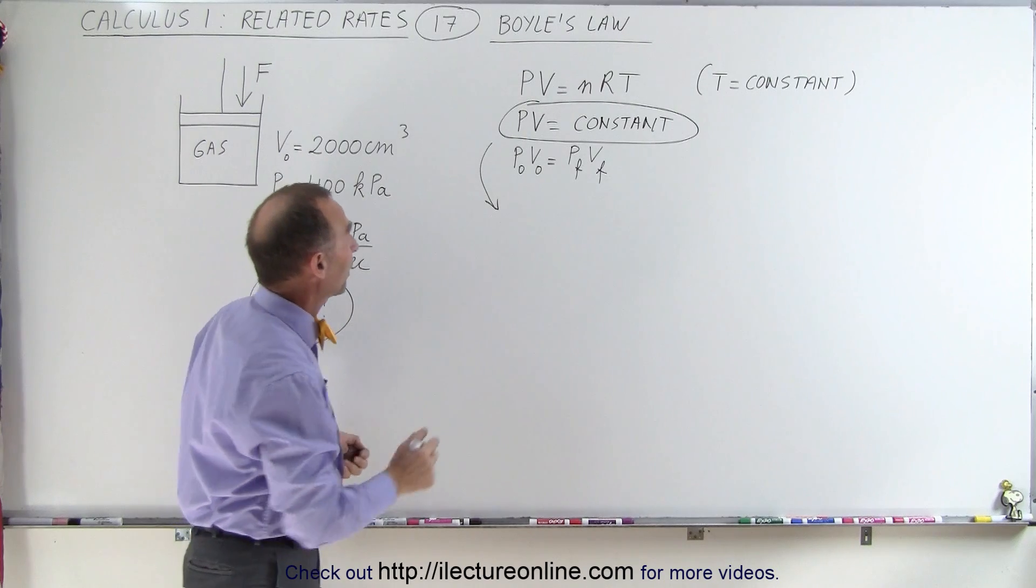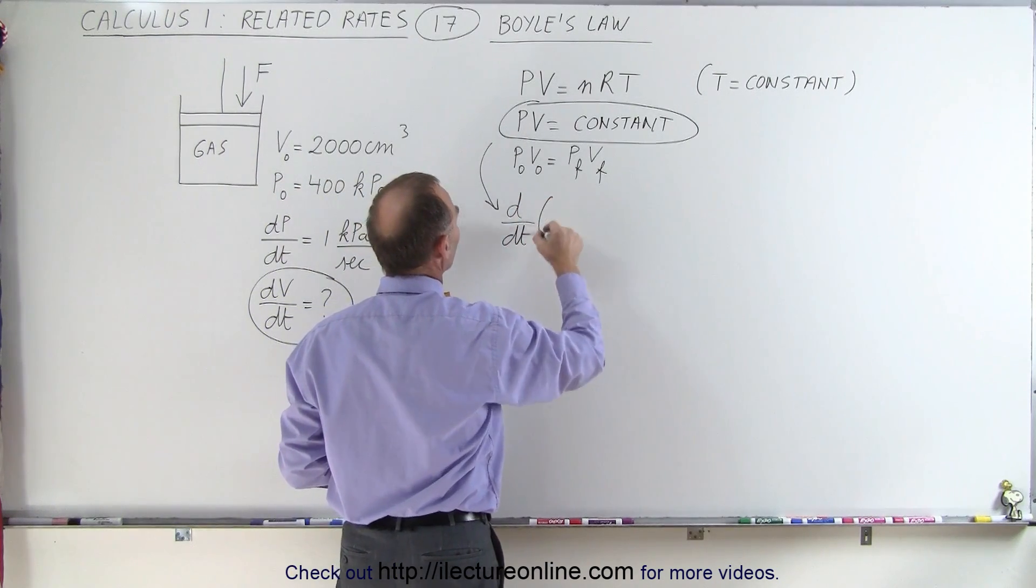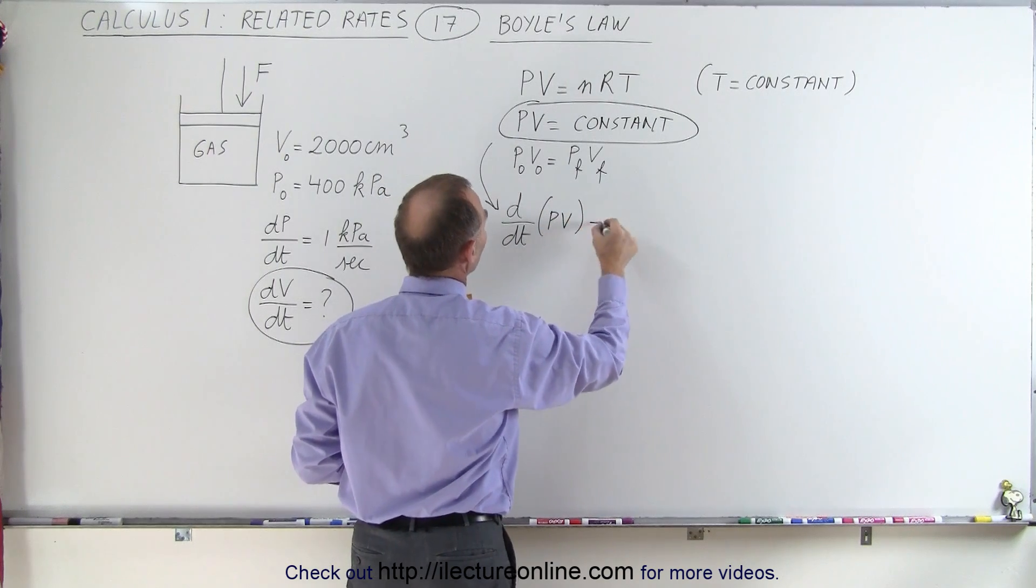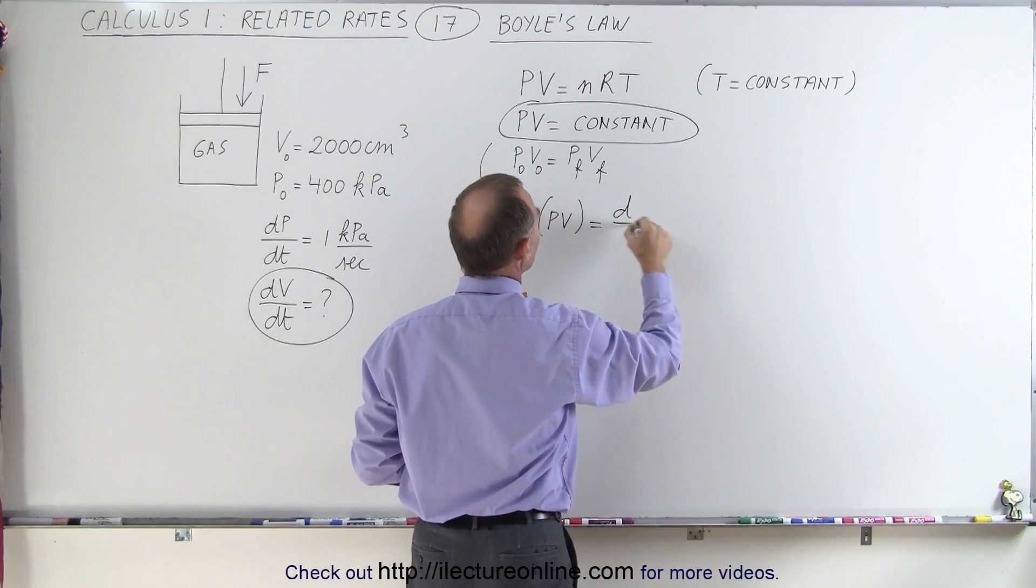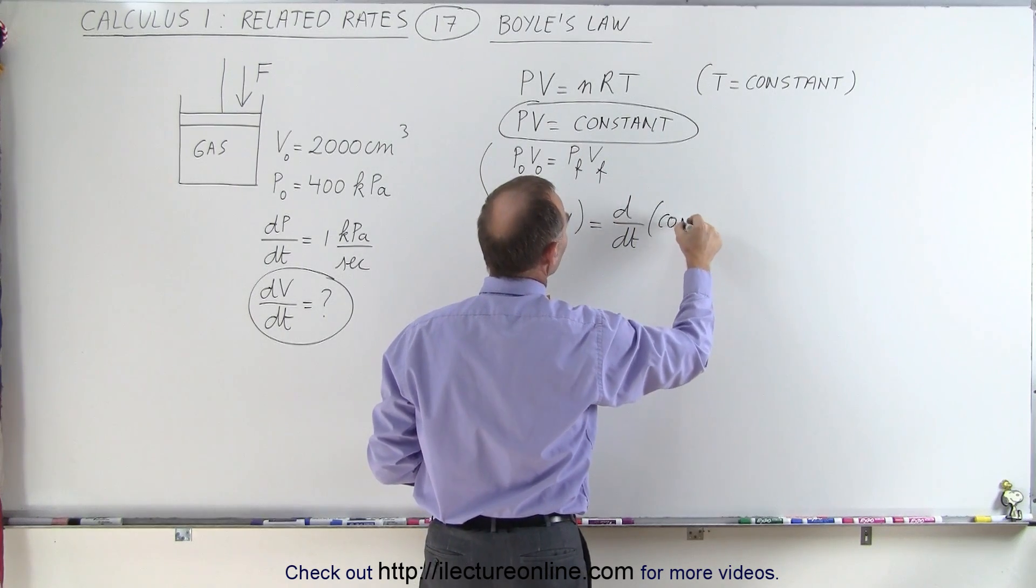So on the left side, we get the d dt of the product of pressure times volume. On the right side, we're going to get the d dt of nRT, which is simply a constant.